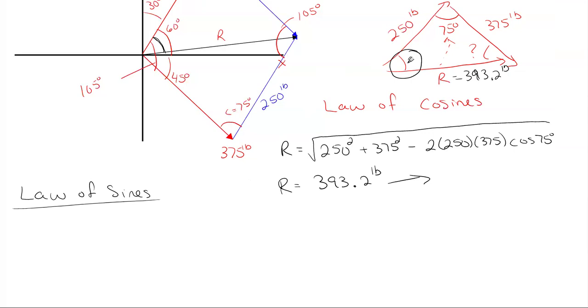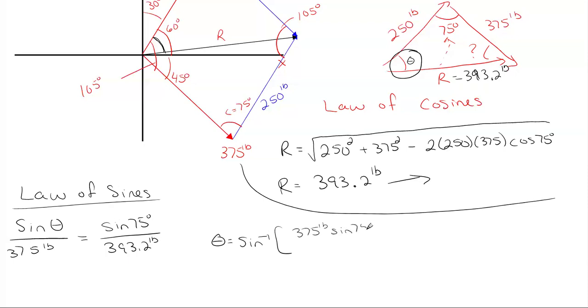So utilizing the law of sines, which I'm just going to change the name here to theta, the sine of angle theta over the side that's opposite it, which is the 375 pounds, must be equal to the same ratio of the sine of 75 degrees with its side opposite, which is my resultant of 393.2 pounds. So we can rearrange and solve for theta, which is going to be theta equals the sine inverse of 375 pounds, sine of 75 after we cross multiply, and then divide by our 393.2 pounds. And that gives us 67.1 degrees.